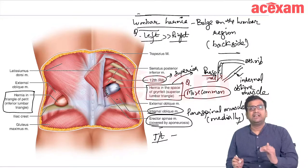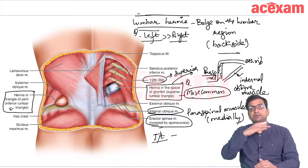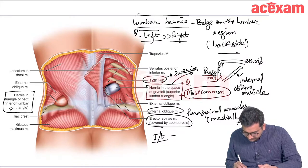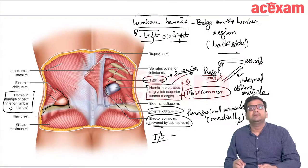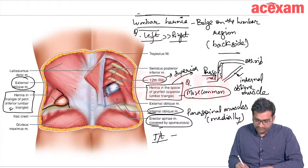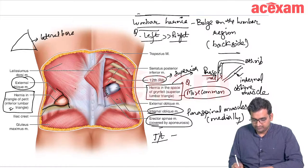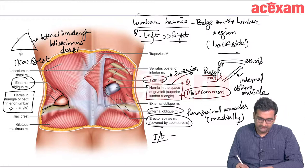The triangle of Grynfeltt (superior lumbar triangle) is bounded medially by paraspinal muscles, superiorly by the 12th rib, and laterally by the internal oblique muscle. The triangle of Petit (inferior lumbar triangle) is bounded medially by the lateral border of latissimus dorsi, inferiorly by the iliac crest, and laterally by the external oblique muscle.